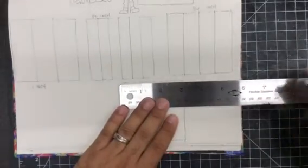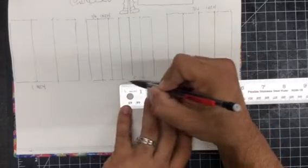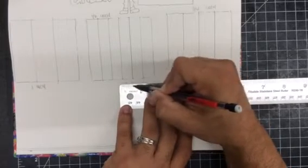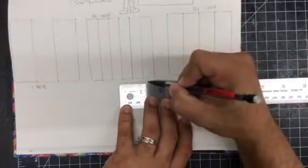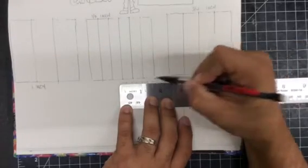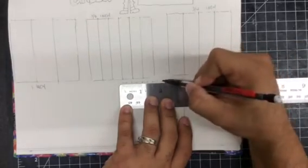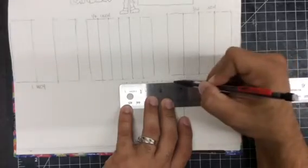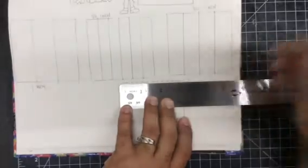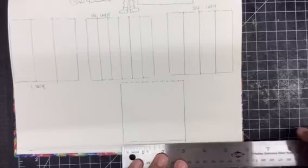And this is the one that you need to know for your project. So I'm going to mark quarter. So quarter, half, three quarter, inch. One quarter, one half, one and three quarters, two. Two and one quarter, two and a half, two and three quarters. And then I'm going to do the same thing to the bottom.